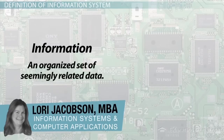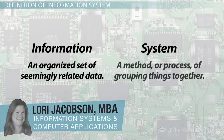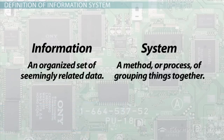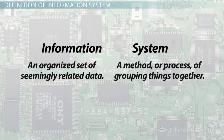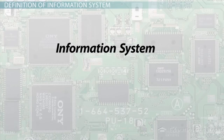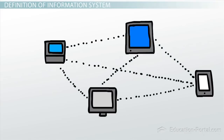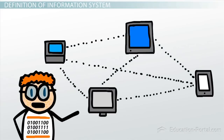Information is an organized set of seemingly related data. A system is a method or process of grouping things together. You may or may not have wondered how these two terms have combined and what helps them to work in near harmony. This video grouping will help you discover the components and processes that make up the early 21st century's information system.